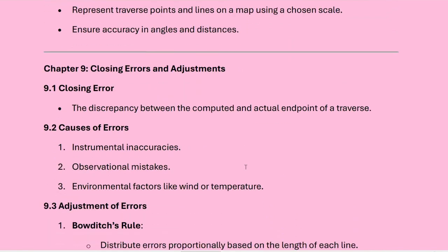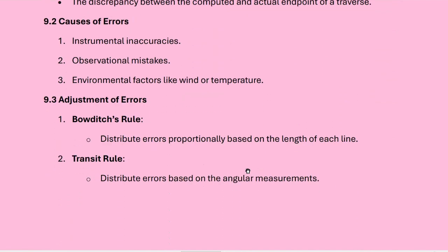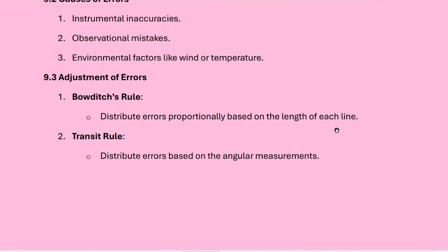What is a closing error? The discrepancy between the computed and the actual end point of a traverse is called a closing error. The basic causes of errors are instrumental inaccuracies, observational mistakes, and environmental factors like wind or temperature. These errors can be adjusted using Bowditch's rule and the transit rule. Bowditch's rule distributes error proportionally based on the length of each line, and the transit rule distributes errors based on angular measurements.